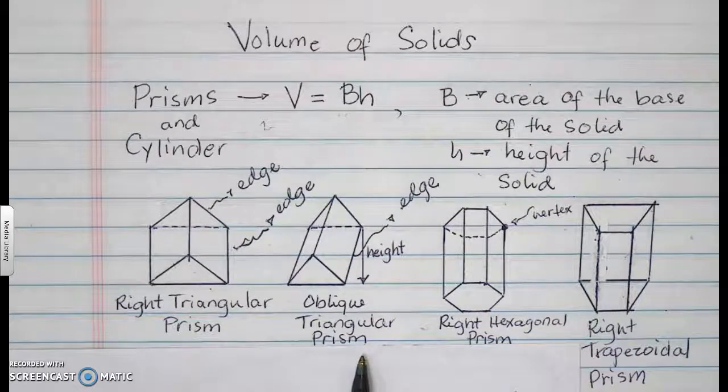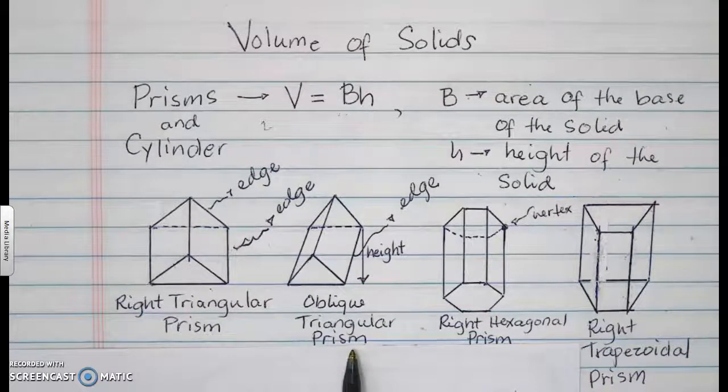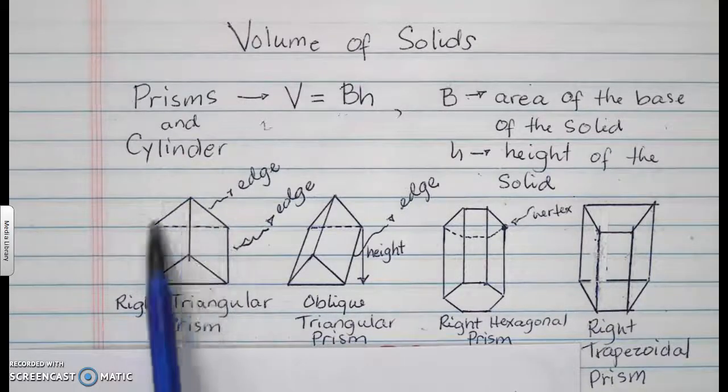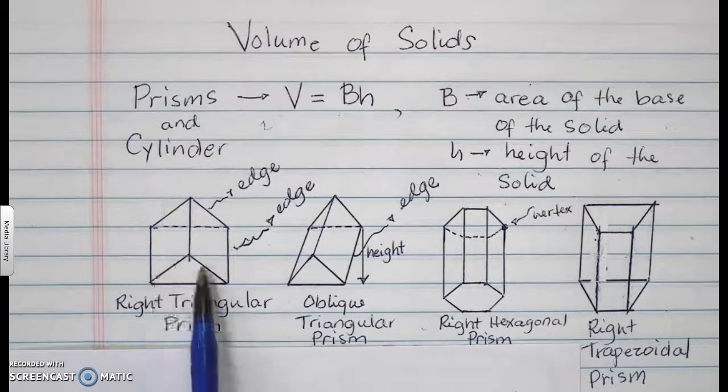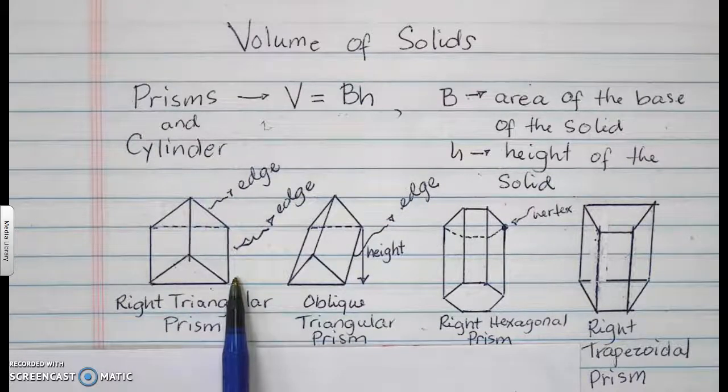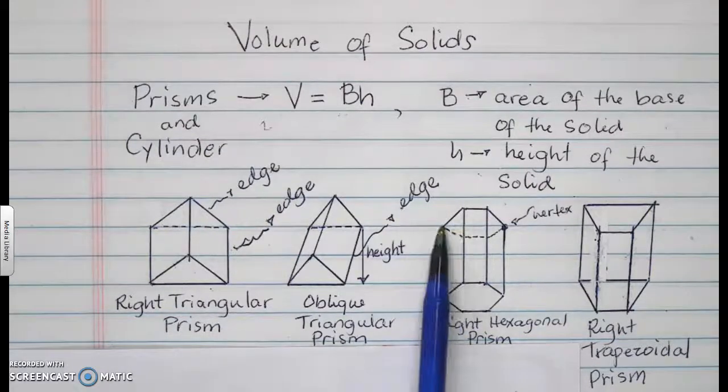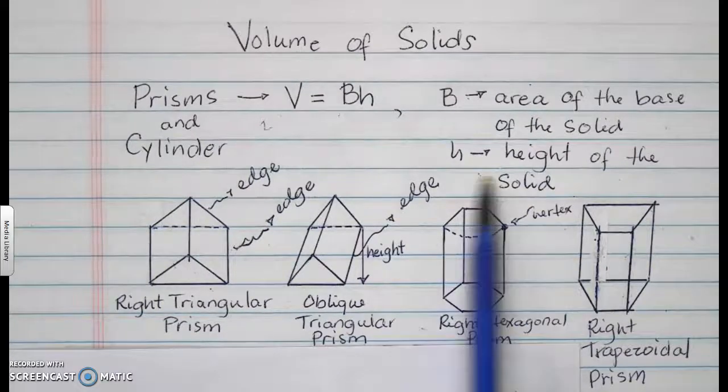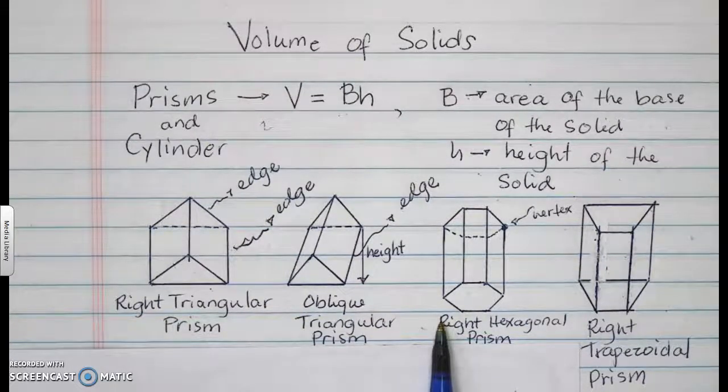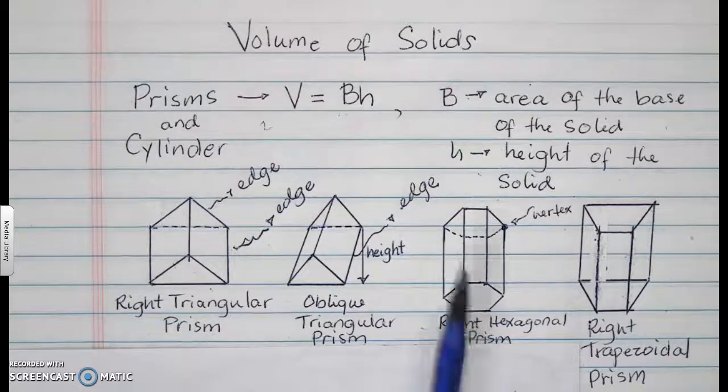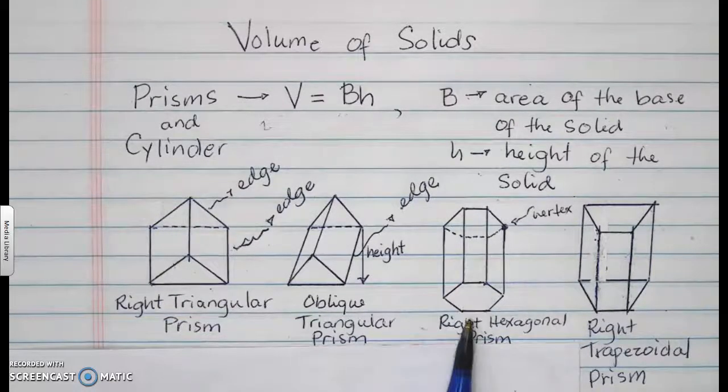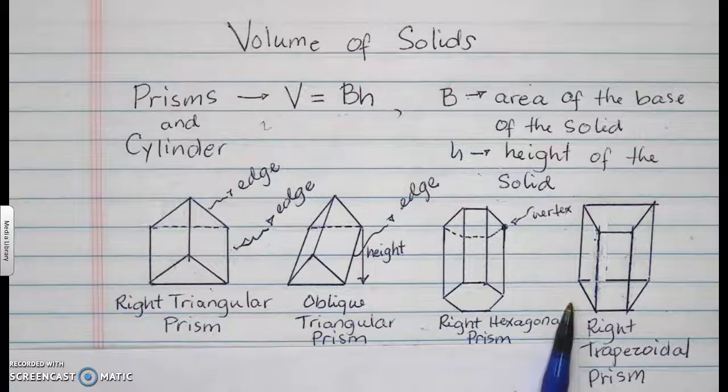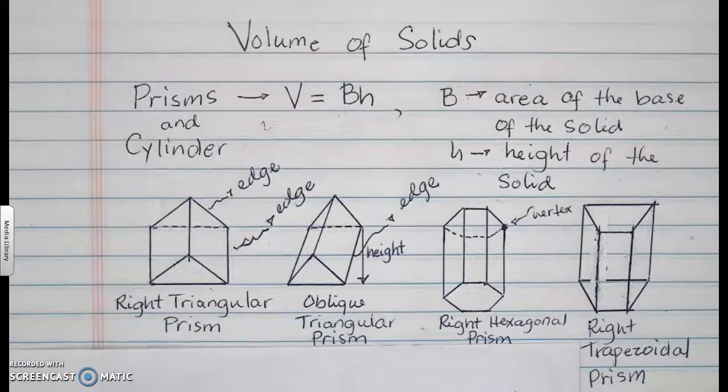Before we move on, I would just like to emphasize some things to you. These are your edges, right here. These are your vertices, right here. Therefore, in this particular example, I have a total of 12 vertices, 6 on top and 6 below. Here, I have 8 in total. Now, let us move on.